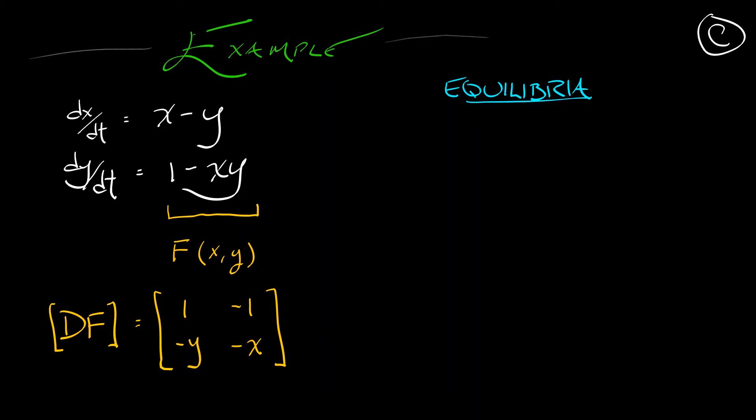So set the right-hand sides equal to 0 and solve both of these equations in order to get the equilibria. The first equation tells us that equilibria occur where x equals y, and the second equation tells us where x times y equals 1. Substituting in, I get x squared equals 1. X is either plus or minus 1, and that's the same value as y.